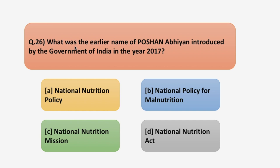The question says: what was the earlier name of Poshan Abhiyan introduced by the government of India in the year 2017? In 2017, our Prime Minister Narendra Modi launched a scheme which has been now renamed to Poshan Abhiyan. The question is asking you to identify the earlier name of this Poshan Abhiyan mission. Four options have been given to you and you have to tell me the correct one.